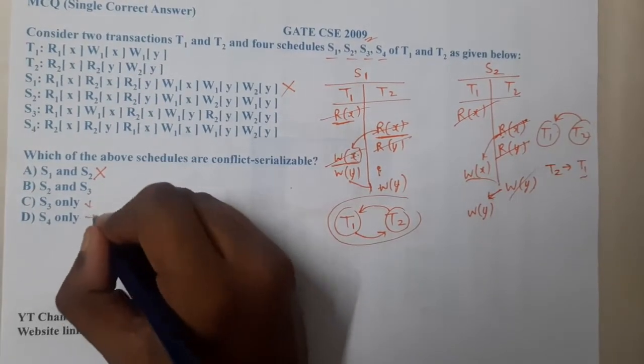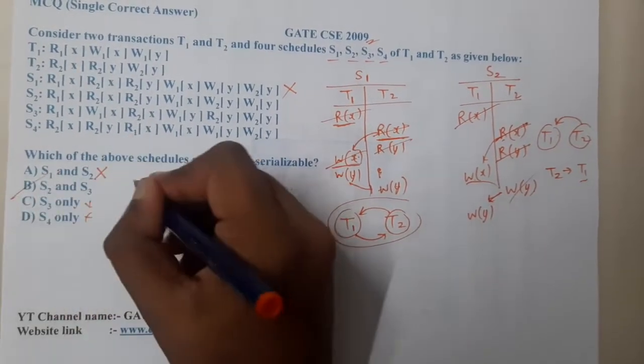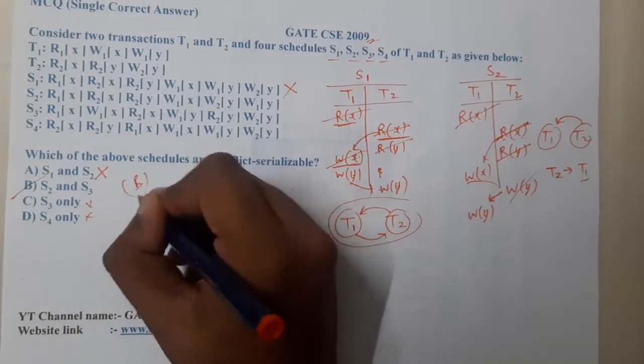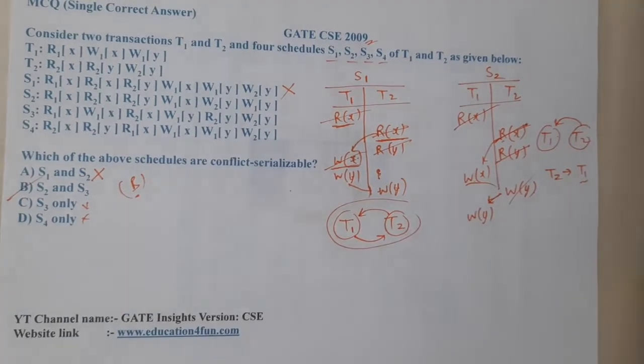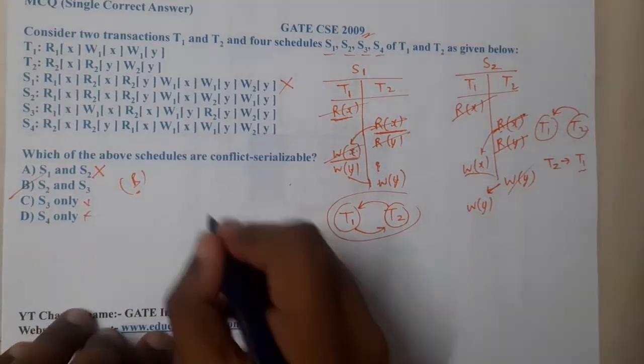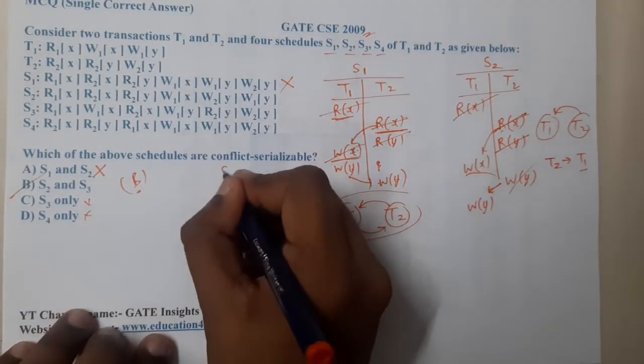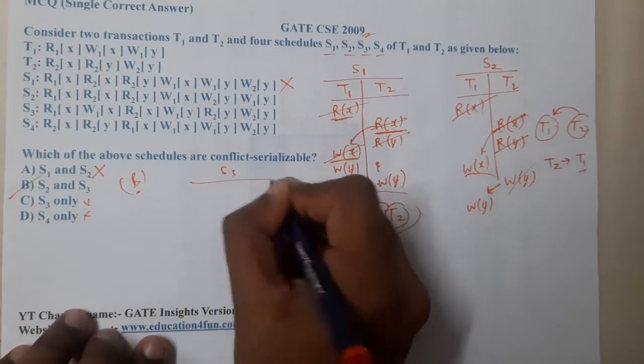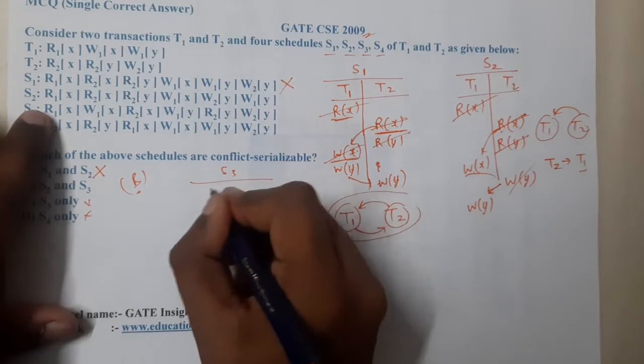Since S2 is conflict serializable and S1 is not, the only remaining valid answer is B. Let me continue verifying S3 and S4 as well.